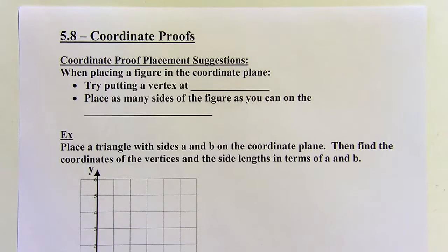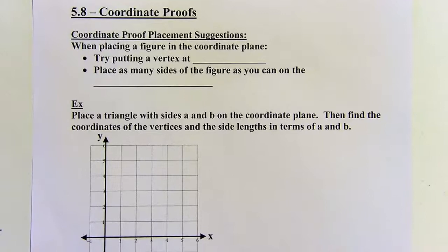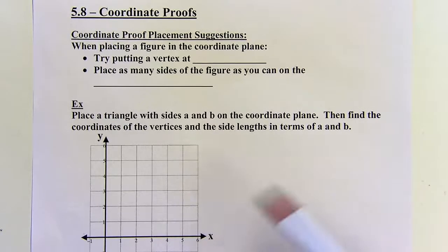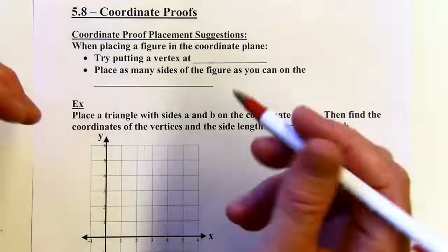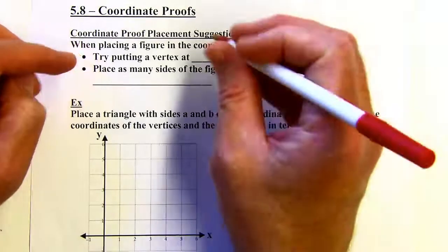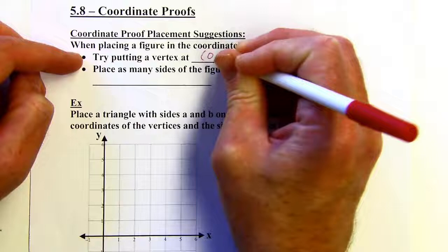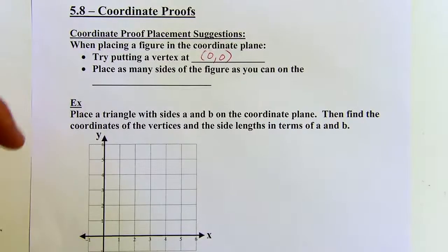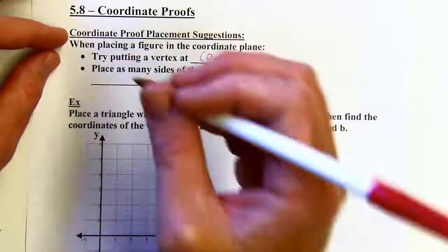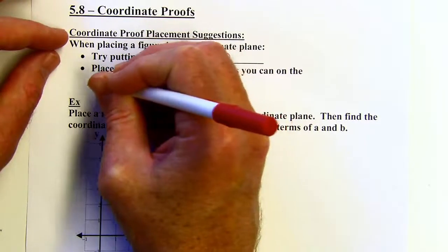We're going to look at 5.8 coordinate proofs today. So for a coordinate proof, I've got some placement suggestions. A lot of times you'll be asked to place a figure on the coordinate plane — the coordinate plane is an xy-axis. You might be asked to place a triangle, rectangle, or parallelogram. It's helpful if you put the figure in certain places; it's not required, but it makes things easier if you put a vertex at 0, 0, at the origin, and place as many sides as you can on the x and y-axes.